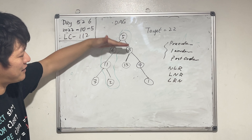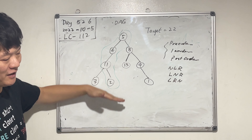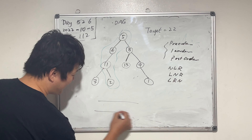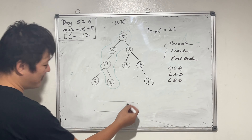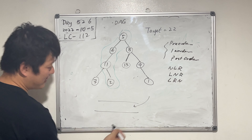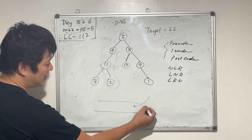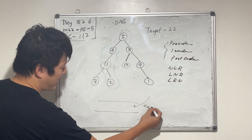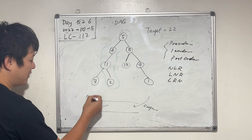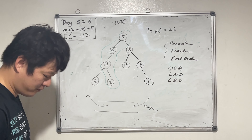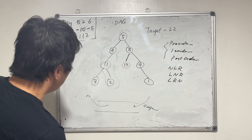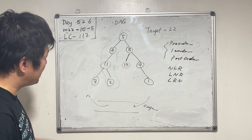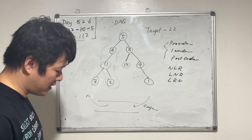Breadth-first search is basically level by level. We use the queue — a deque, double-ended queue. The queue is first-in first-out: we push an element to the queue, we take one out of the queue. Coming back to this question, we can solve this using depth-first search.